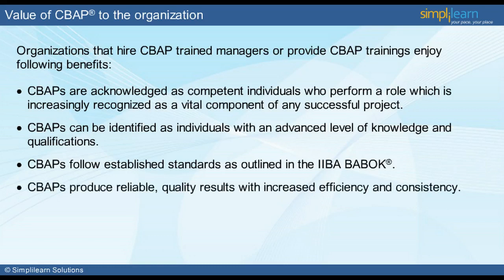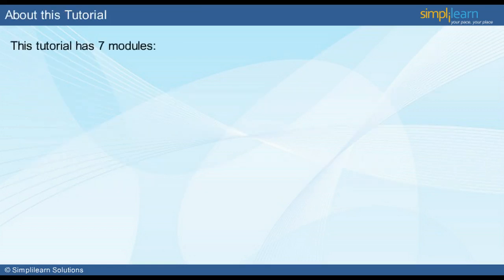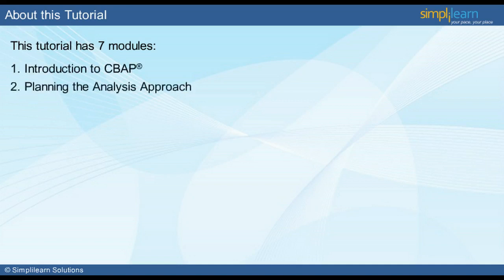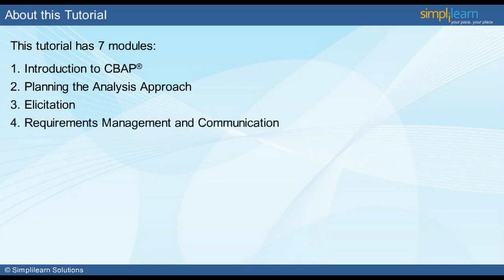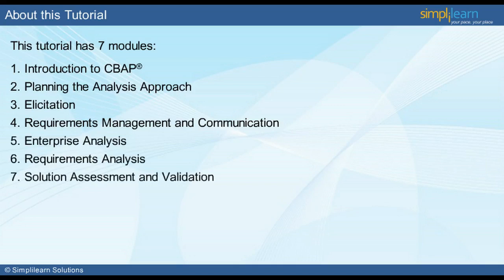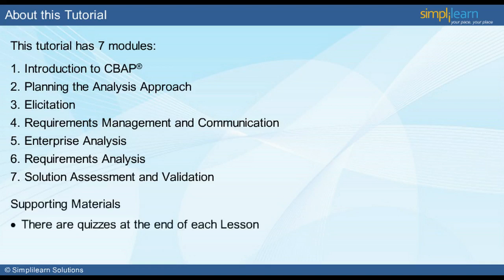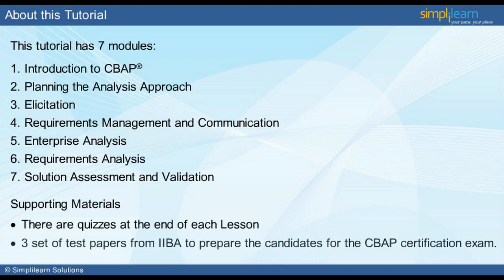This course is categorized into seven modules. The first module will introduce us to CBAP. In the second module, we will find out how to plan the analysis approach. Elicitation is dealt with in detail in the third module. The fourth module is on requirements management and communication. Enterprise and requirements analysis covers the fifth and sixth modules respectively. Finally, we will look into solution assessment and validation. Quizzes are provided at the end of each module. Additionally, there are three sets of test papers from IIBA which will help the candidate in preparing for the certification exam.